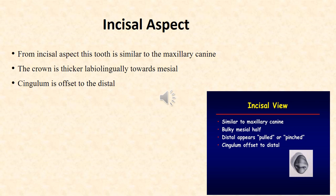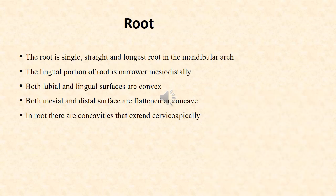Incisal aspect: From the incisal aspect, this tooth is quite similar to the maxillary canine. The crown is thicker labiolingually towards the mesial surface. The cingulum is offset towards the distal surface. The root is single, straight, and the longest root in the mandibular arch. The lingual portion of the root is narrower mesiodistally. Both labial and lingual surfaces are convex, while both mesial and distal surfaces are flattened or concave. In the root, there are concavities that extend cervicoapically.